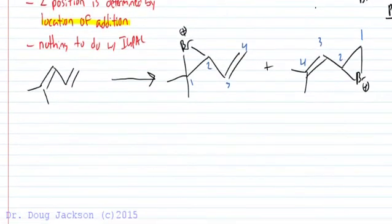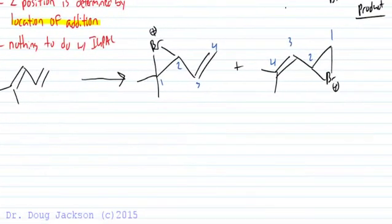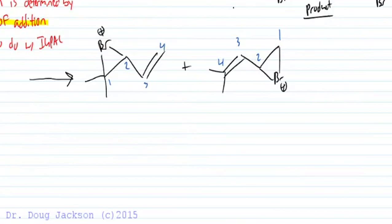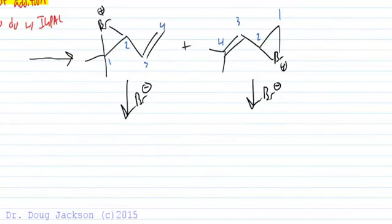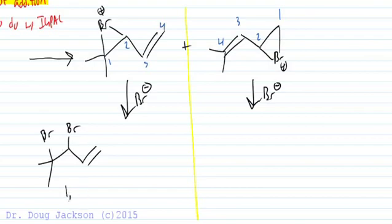So what if we have a non-symmetrical alkene and we've got two possible additions? So each of these in step two have their own possible products and we have to look at all four possible products. If we put a little dividing wall down the middle to keep them separate, we can see that the first intermediate has its own 1,2 product and 1,4 product.